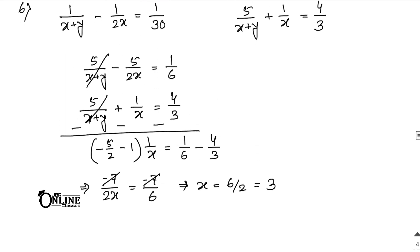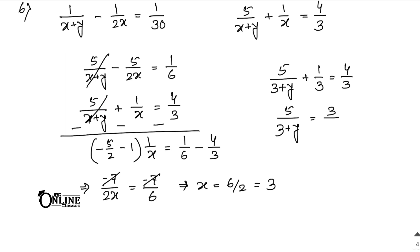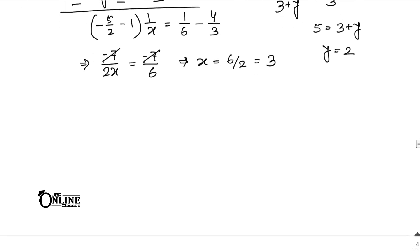With x equals 3, substitute into 5/(x plus y) plus 1/x equals 4/3: 5/(3 plus y) plus 1/3 equals 4/3, so 5/(3 plus y) equals 1, giving 3 plus y equals 5, so y equals 2. Now find 2x² minus y²: 2 × 9 minus 4 equals 18 minus 4 equals 14.